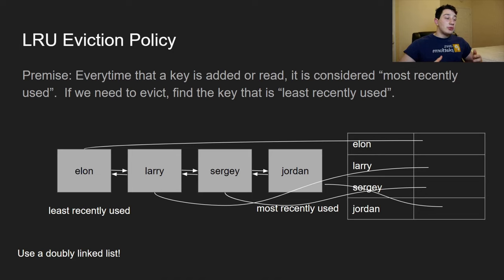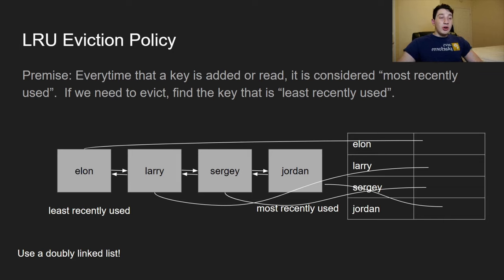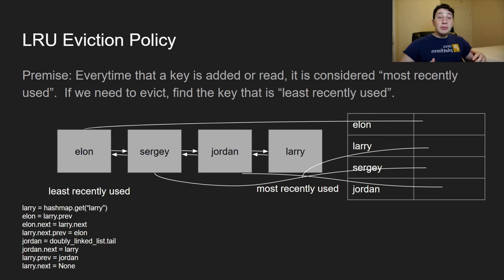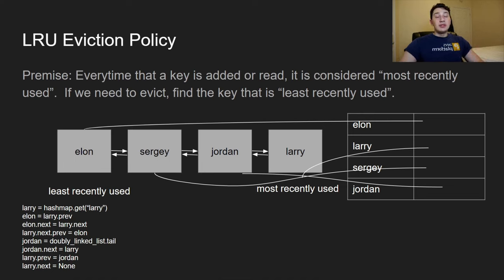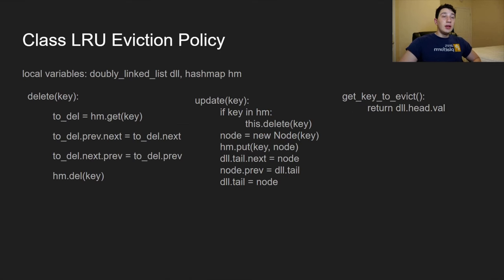Here's the pseudocode for moving larry to the most recently used position in the doubly linked list: get larry's node from the HashMap; set elon's next to larry's next (which is sergey); change sergey's previous pointer to elon; get the tail node (jordan); set jordan's next to larry, larry's previous to jordan, and null out larry's next pointer to avoid a cycle.